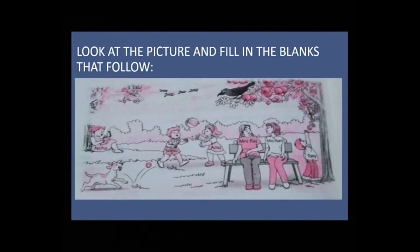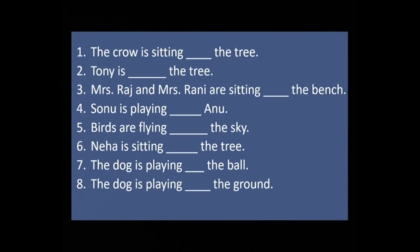Now look at the picture and fill in the blanks. In this picture there are characters: Neha, Sonu, Anu, Mrs. Raj, Mrs. Rani, Tony, a dog, and a crow. Based on this picture: The crow is sitting ___ the tree. Tony is ___ the tree. Mrs. Raj and Mrs. Rani are sitting ___ the bench. Sonu is playing ___ Anu. Birds are flying ___ the sky. Neha is sitting ___ the tree.